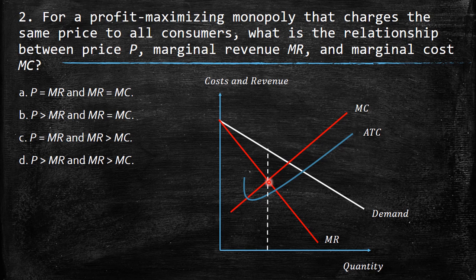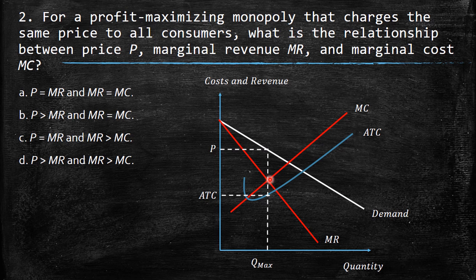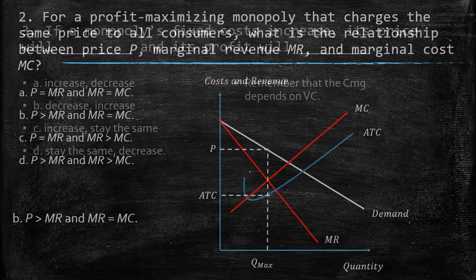When marginal revenue exceeds marginal cost, you have incentives to produce more, because each additional unit brings in more money than it costs. You keep producing until MR equals MC. Beyond that point, additional revenue no longer compensates the cost of the extra unit. You project the quantity up to the demand curve to find the price charged, and you can see the price is definitely higher than the marginal revenue.